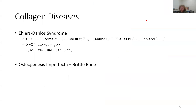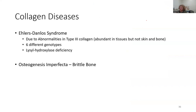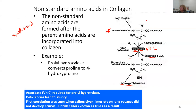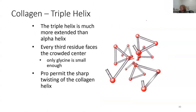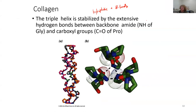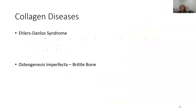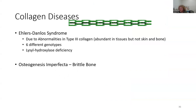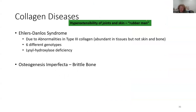Collagen-related diseases: Ehlers-Danlos syndrome. What ends up happening is you have a lysyl hydroxylase deficiency — the enzyme responsible for forming modified lysine. This results in hyper-extensibility of joints and skin — a 'rubber man' type of symptom with extreme flexibility.